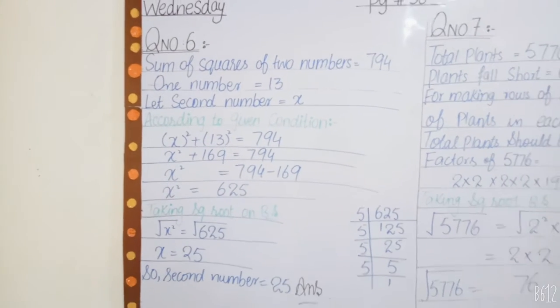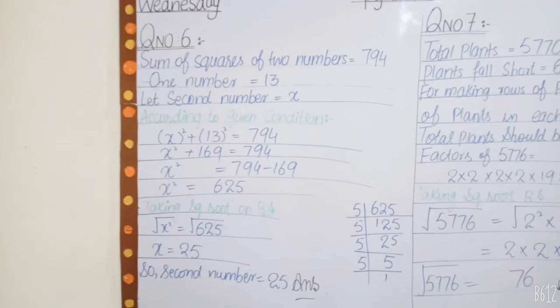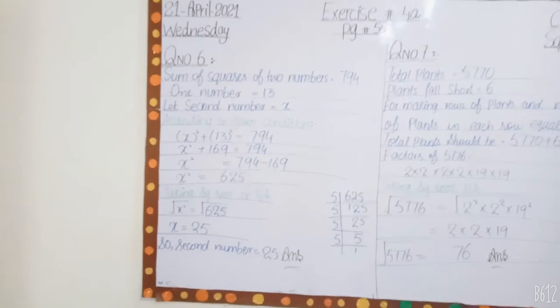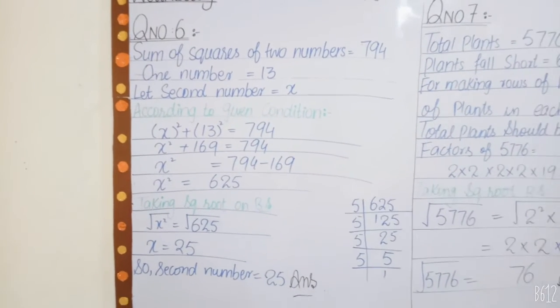According to given condition, x² + 13² = 794. Because you can see, the statement of the book is given, the sum of squares of two numbers equals 794.